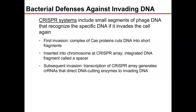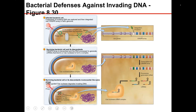Bacteria also have CRISPR systems — CRISPR stands for Clustered Regularly Interspaced Short Palindromic Repeats. CRISPR systems take bacteriophage DNA, cut it into small pieces, and insert it into a CRISPR array. During the first invasion by a bacteriophage, a Cas protein cuts up the phage DNA and some of that phage DNA is placed into the CRISPR array.